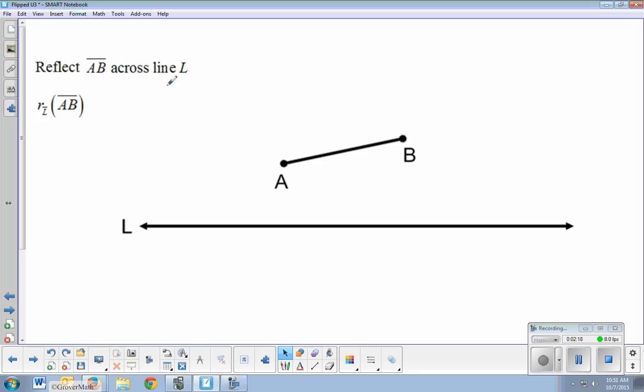Now reflecting across the line. So I want to reflect AB across line L. Here's AB and here's line L. And notice that we have a lowercase r here. The capital R was used for rotations.